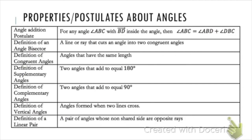Supplementary angles are two angles that add up to 180 degrees. Complementary angles are two angles that add up to 90 degrees. The definition of vertical angles — put a star by this because we'll use it for the rest of geometry — these are angles formed when two lines cross. A linear pair is two adjacent angles whose non-shared sides form a straight angle or opposite rays.